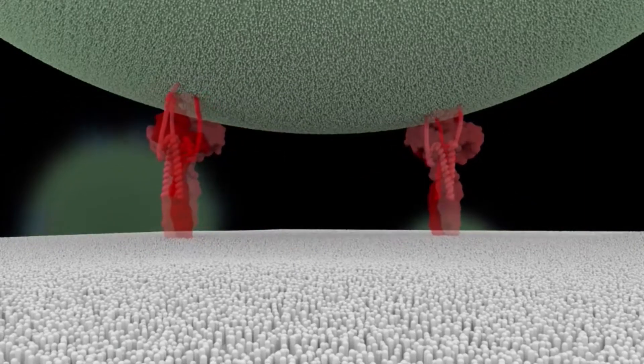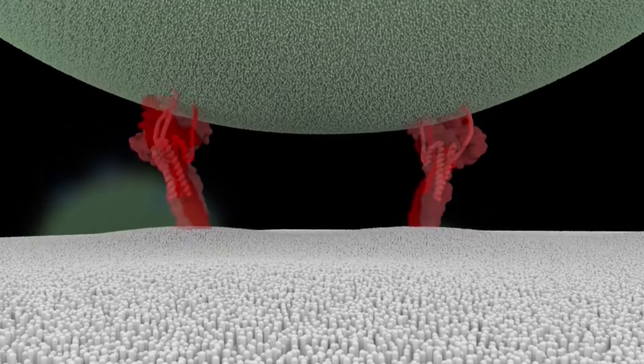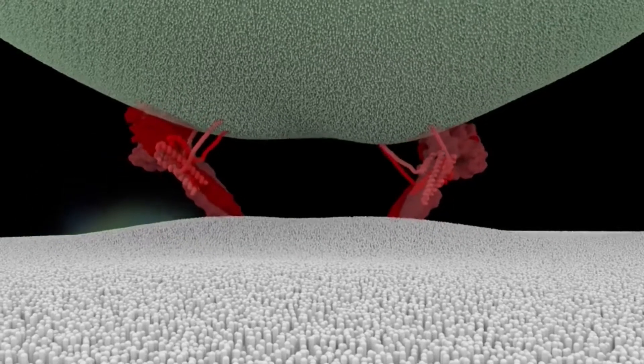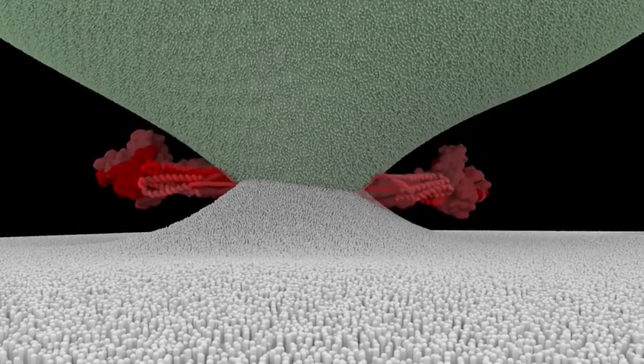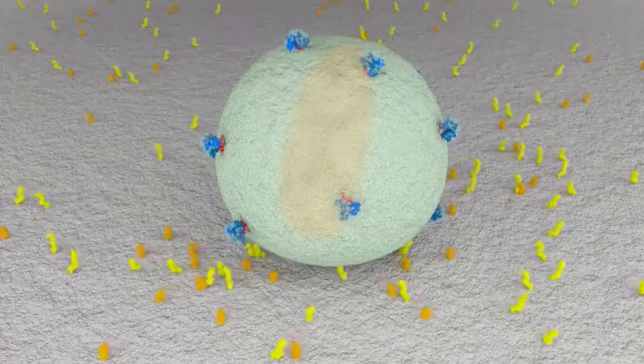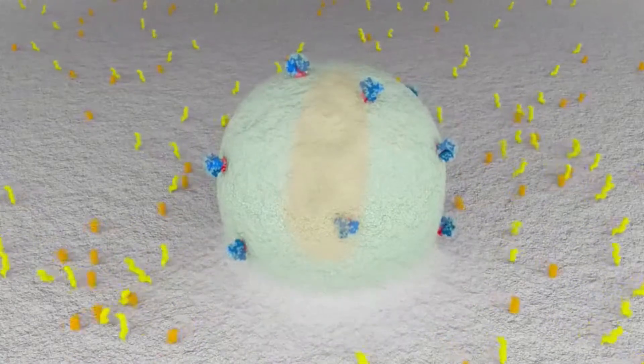Next, envelope protein folds back on itself, forcing the fusion of the T cell membrane with the viral membrane. This allows the viral capsid to enter the cell.